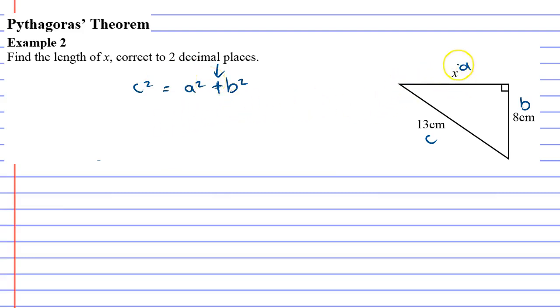But because we're trying to find what is essentially a shorter side, a side which is less than 13, we actually need to change this to a subtraction. So we're going to do a rearrangement of the formula. If x is a, essentially we're trying to find a.